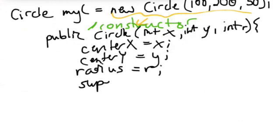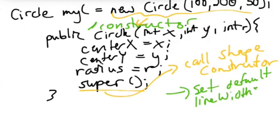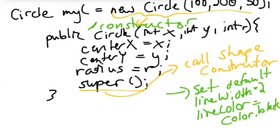There's a piece of code that says super. And this is a special keyword in Java that says call that parent constructor. So this is going to call the shape constructor. And what does the shape constructor do? Well, I'm not going to write it out, but it would do things like set default line width, maybe to 2, line color maybe gets assigned color.black, and so on. So now we've created a circle. And in creating a circle, we've actually set everything the shape class gives you and also the stuff that the circle class gives you.